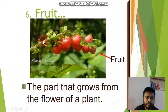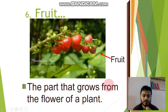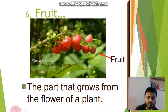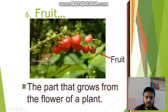Sixth one, fruit. The part that grows from the flower of a plant, that is fruit. So these are the six parts of the plants and their functions.